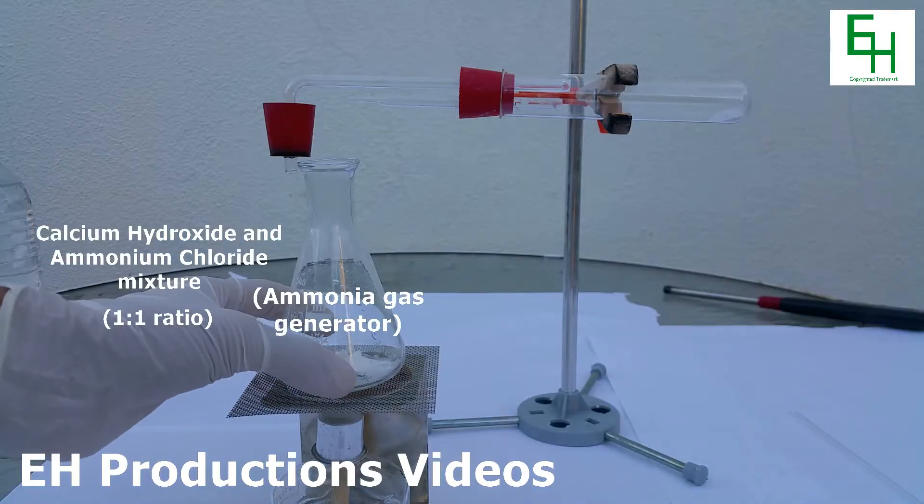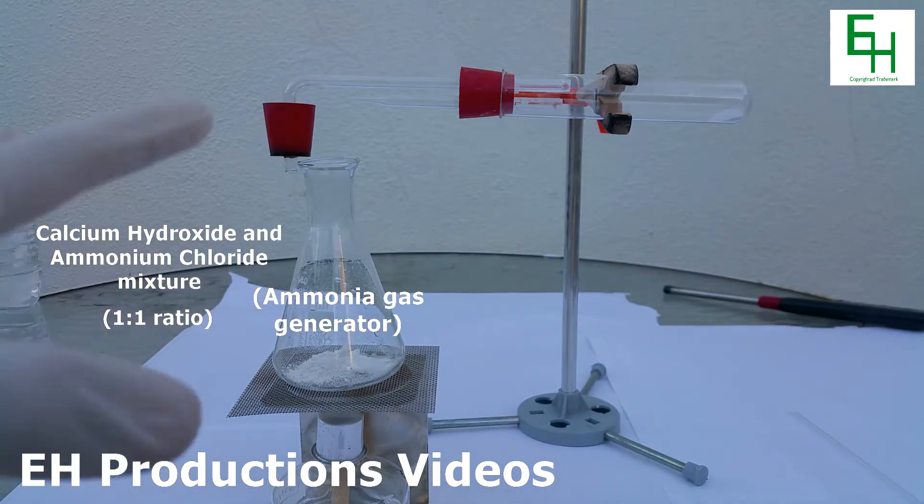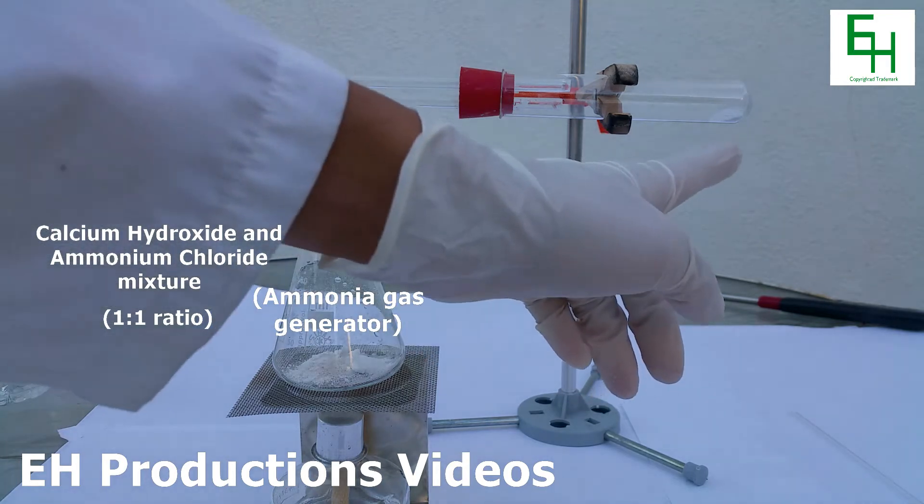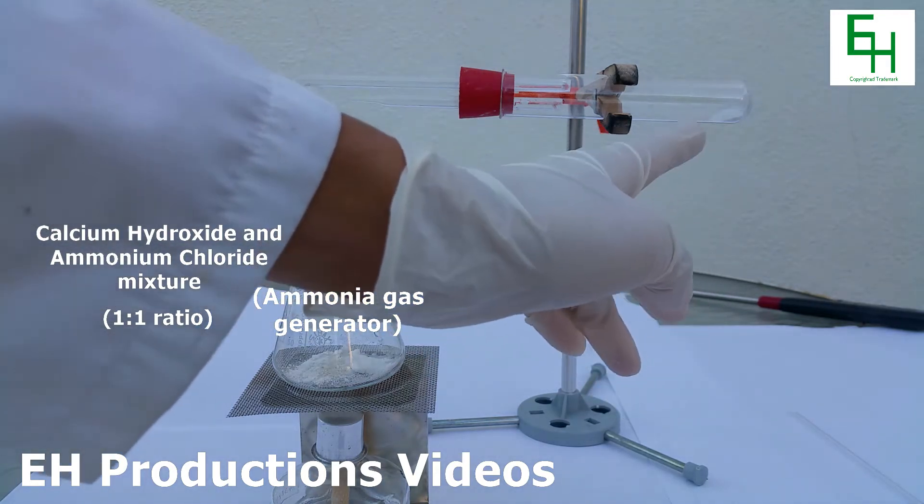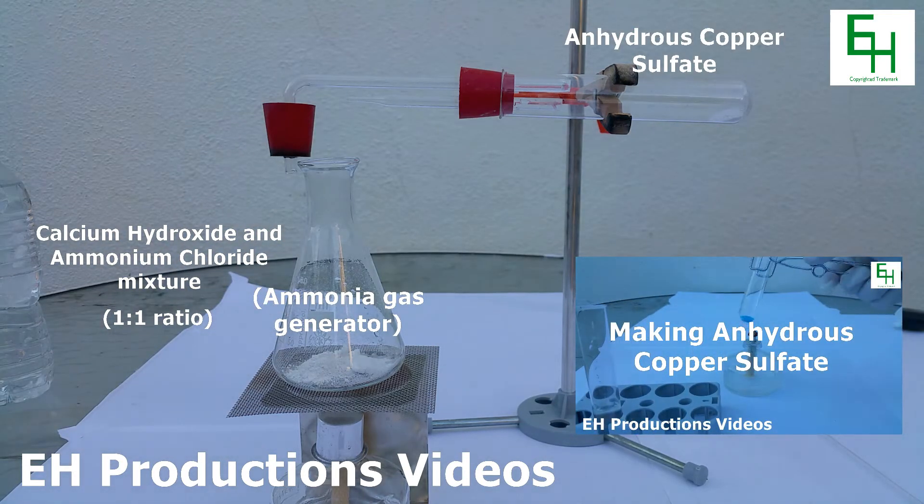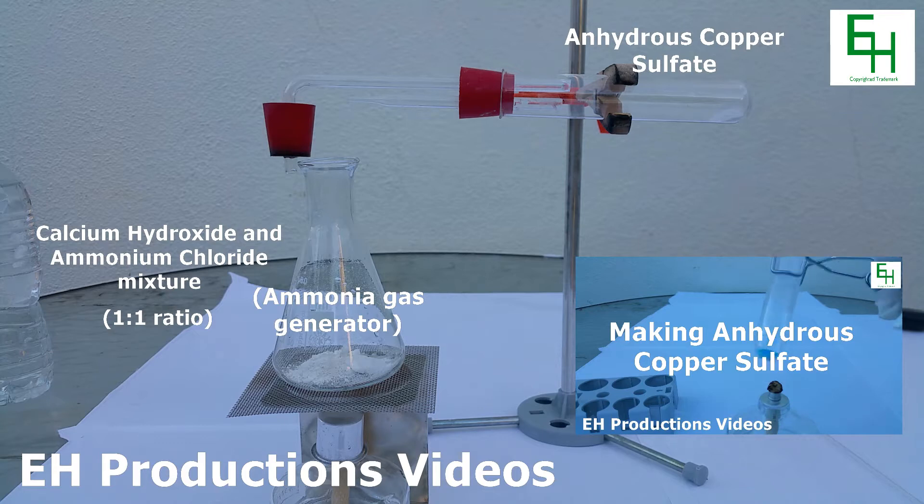So in this flask, I have a mixture of ammonium chloride and calcium hydroxide at a one-to-one ratio, and in this test tube over here, I have some anhydrous copper sulfate. You can look at a previous video to see how you can make some of that.